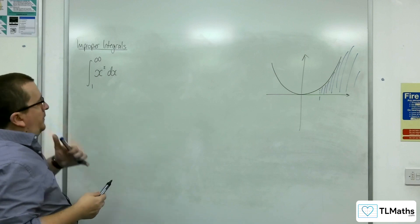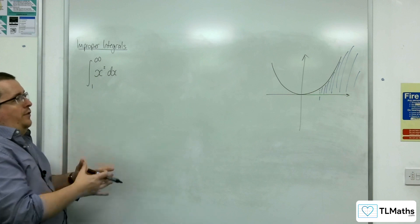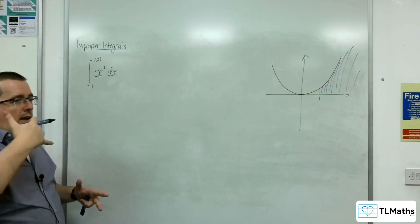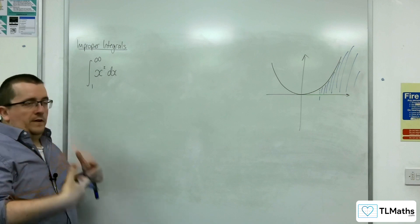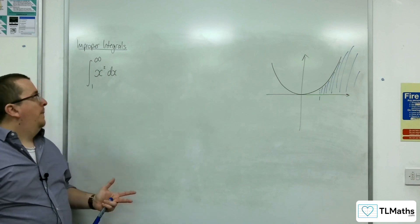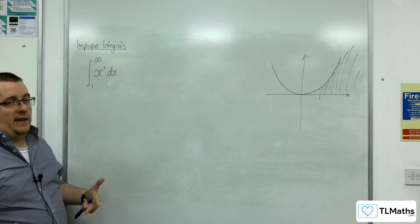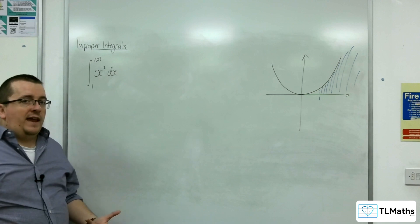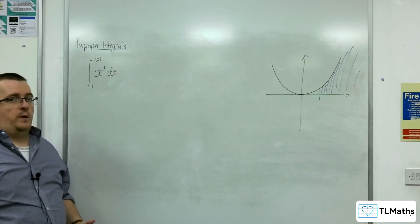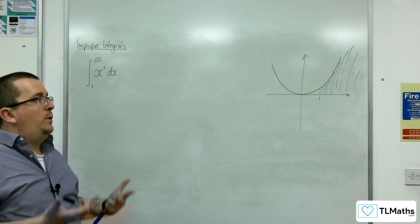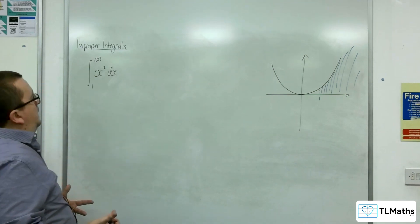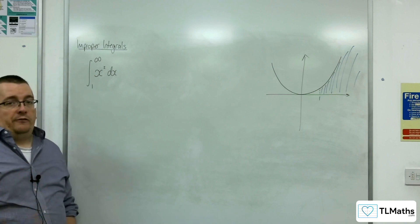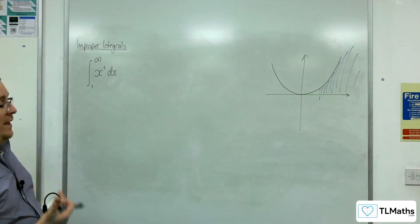What we need to think about is that there is a problem: if I continue using first-year integration techniques, I'm going to end up using infinity like a number — substituting infinity in as if it were a value you could substitute in, which it's not. We can't do that. So I need to set up some structure to allow myself to work with infinity.